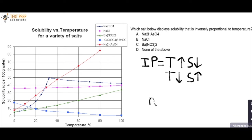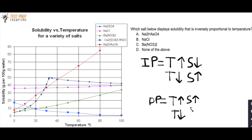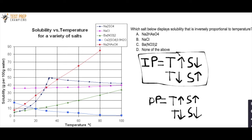Now we're going to look at whether any of these salts display an inverse proportionality. Which salt displays solubility inversely proportional to temperature? Let's check A, B, and C. If none of them display that relationship, then D will be the answer.